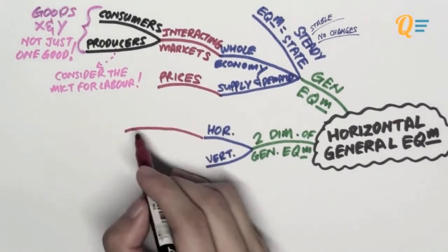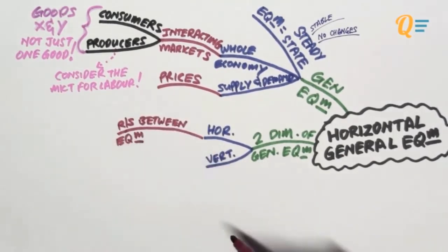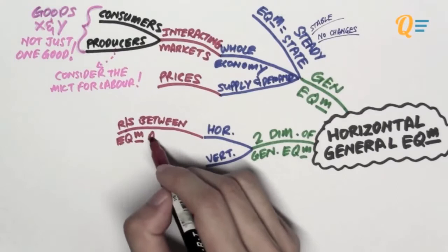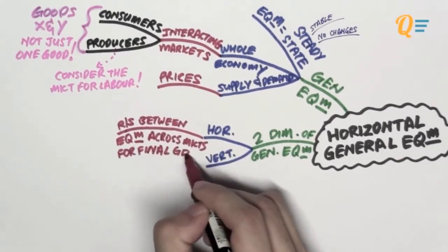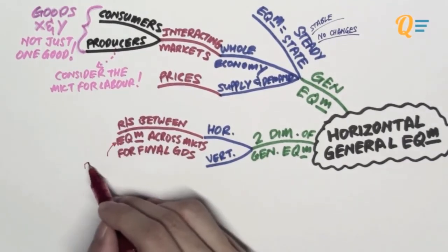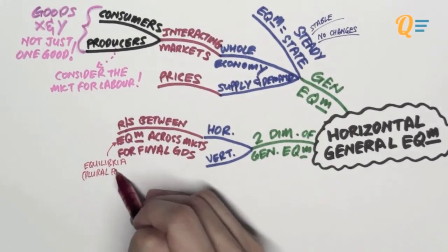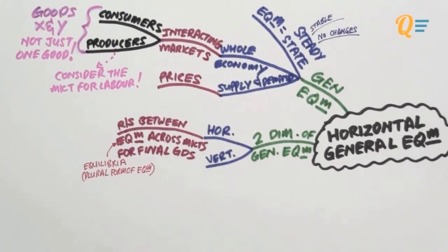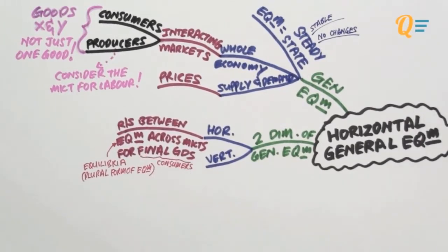Let's talk about the formal definition of horizontal general equilibrium. What this is trying to tell us is we're trying to analyze the relationship between equilibria across markets for final goods. EQM here is actually equilibra, the plural form of equilibriums. So you've got many equilibriums; that gives you equilibra. Final goods here, we're talking about the consumers.